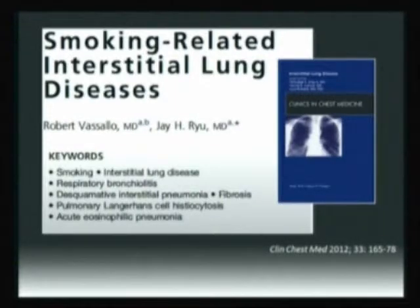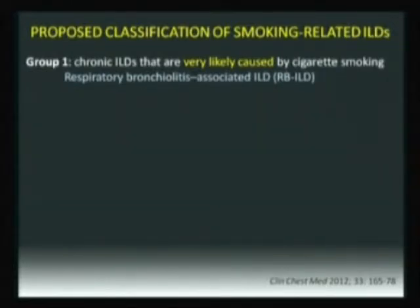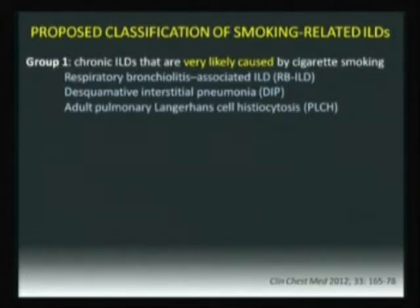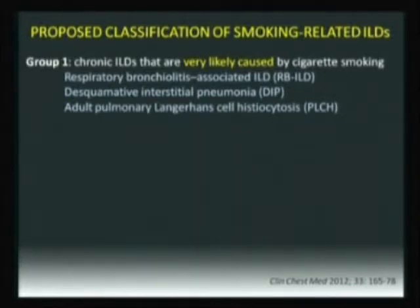This is the new classification proposed by JREU in Clinical Chest Medicine for smoking-related ILD disease. They propose a new classification as follows. First: chronic ILDs that are very likely caused by cigarette smoking — if you don't smoke, you don't get the disease. These include RB-ILD (respiratory bronchiolitis with interstitial lung disease), desquamative interstitial pneumonia, and pulmonary Langerhans cell histiocytosis. It is extremely likely that these diseases are directly caused by smoking.